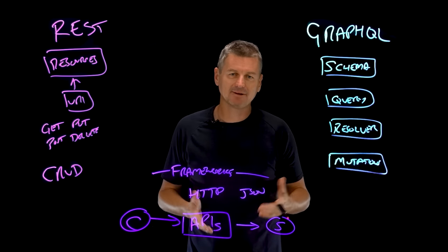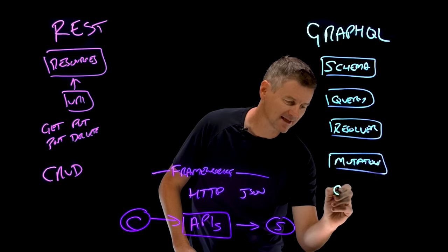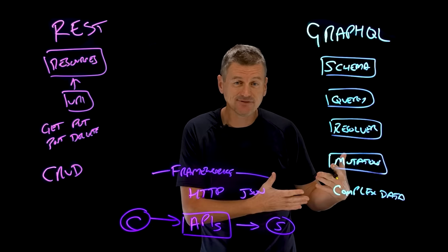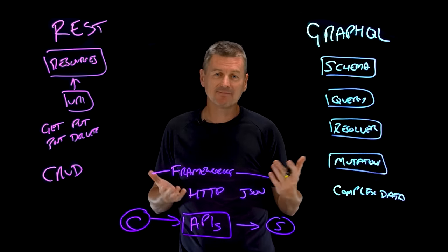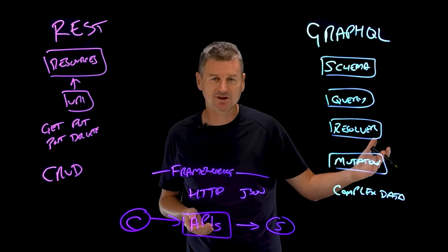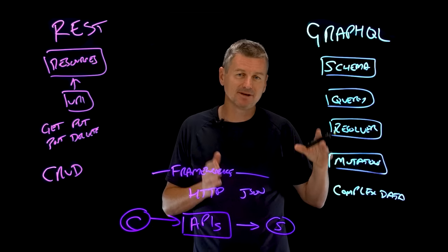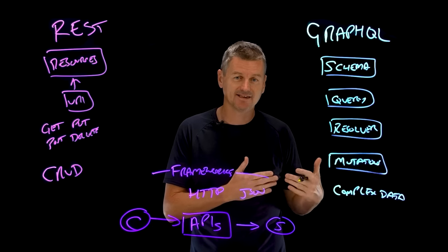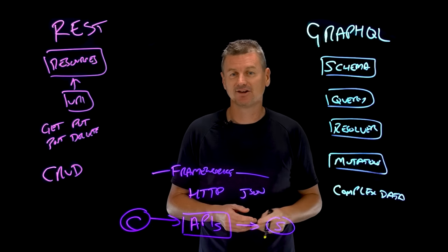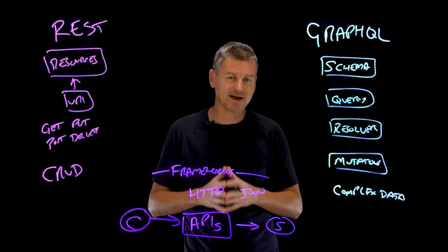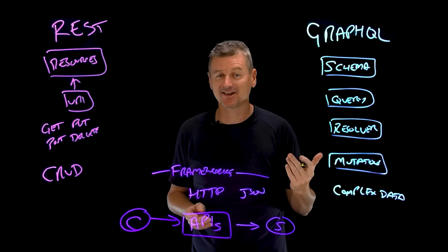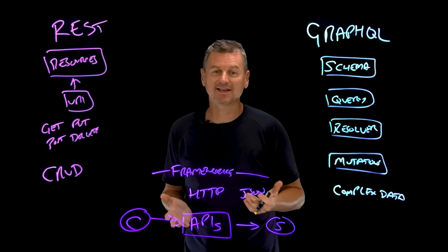GraphQL is better suited for applications that require more complex data requests — where we have nested fields or multiple data sources to pull from. For example, a company that provides a suite of financial planning tools might need data from multiple sources like bank transactions, investment portfolios, and credit scores. With GraphQL, the company can build a single API endpoint that allows clients to query all of the data in a single request. Clients simply specify exactly the data they need, and the server uses a set of resolvers to fetch the necessary data from each source and assemble it into a response that matches the query structure. REST and GraphQL can also work together, since GraphQL doesn't dictate a specific application architecture — it can be introduced on top of an existing REST API and work with existing API management tools.